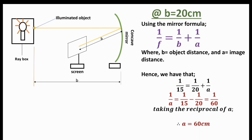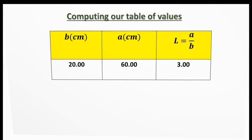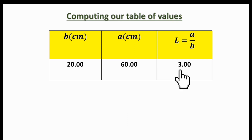Taking the reciprocal, a equals 60 centimeters. We then evaluate a over b: 60 over 20 equals 3. We now complete our table of values — remember, the header must contain the parameters with their units, and decimal places should be uniform. So for b = 20.00 cm, a = 60.00 cm, and l = 3.00.